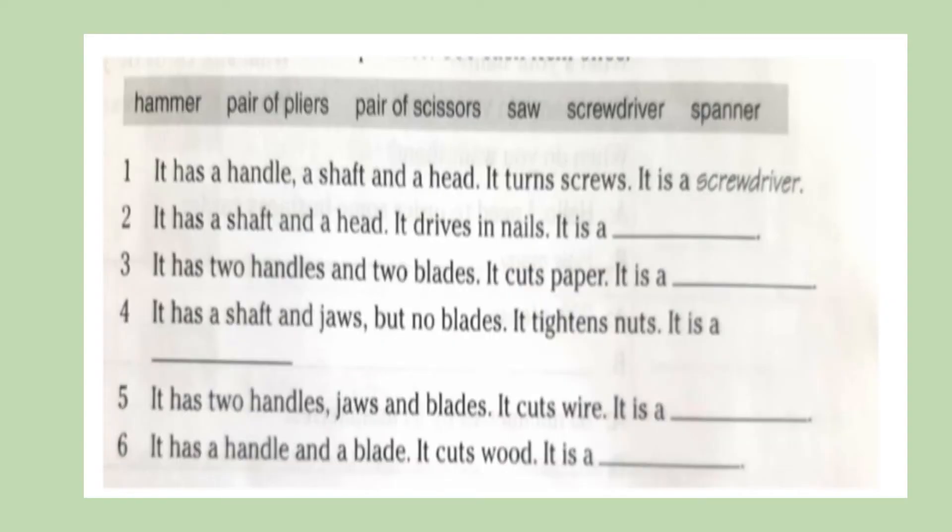Okay, now let's start by looking at this exercise. Here we have the names of some tools: hammer, pair of pliers, pair of scissors, saw, screwdriver, and spanner. Here we have descriptions for these tools. The first part of the description is a description of the tool itself, and then the second part is the description of the use of the tool.